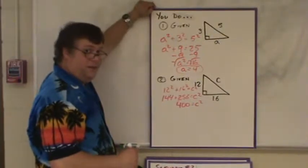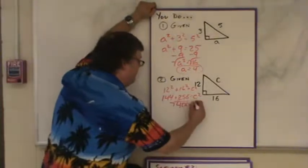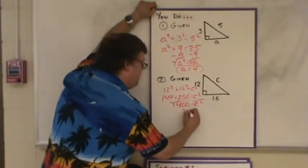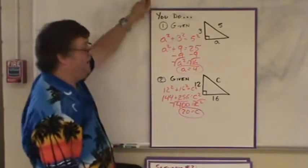Am I done? That's right, I've got to do the square root here. So I get 20 is equal to c, and that is my final answer for that one.